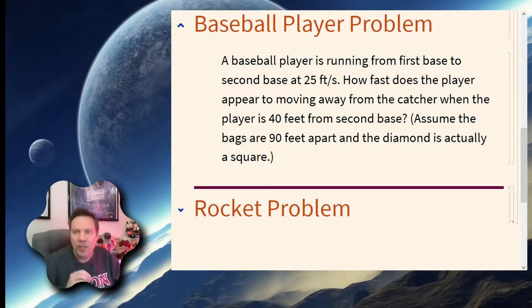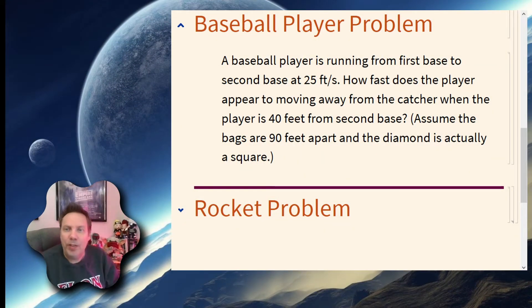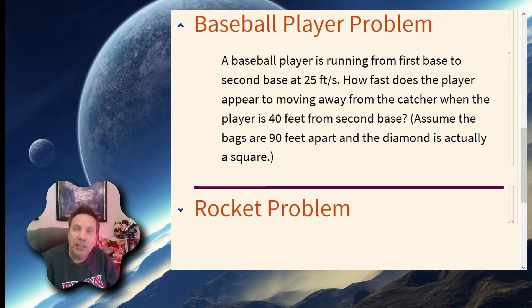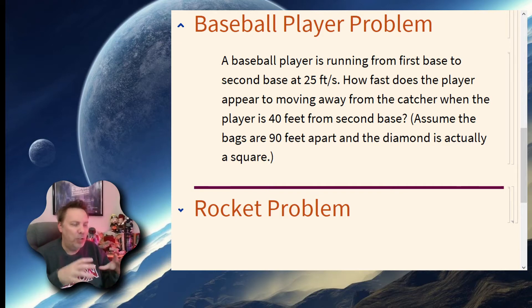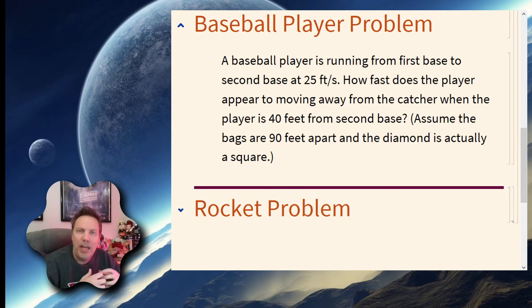So here's the situation. Suppose I have a baseball player that's running from first base to second base at a rate of 25 feet per second. That's approximately 17 miles an hour. I want to know how fast is the baseball player moving away from the catcher when the player is 40 feet from second base. And we're going to assume that a baseball diamond bag to bag is 90 feet.